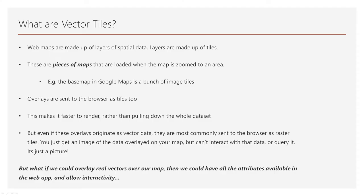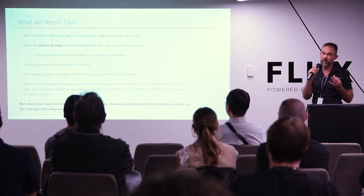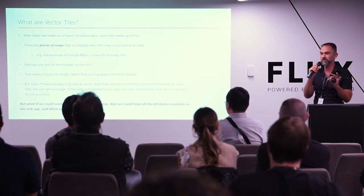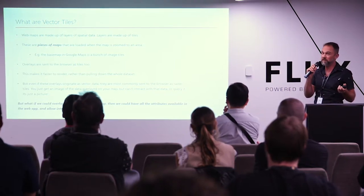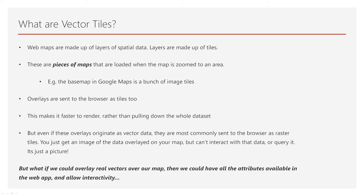What are vector tiles, first up? Basically web maps made up of spatial data, which are basically made up of tiles. Tiles are pieces of maps that are loaded when the map is zoomed to an area. That saves you from loading an entire data set every time the user goes to a certain area. So for example, the base map in Google Maps is a bunch of image tiles. Overlays are sent to the browser as tiles too. This makes them faster to render rather than pulling down the whole data set. But even if these overlays originate as vector data, they're often sent to the browser as raster image tiles as well.